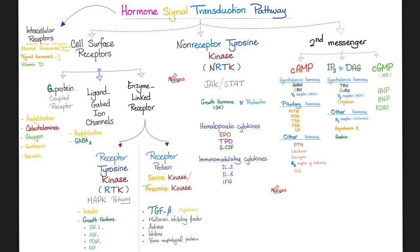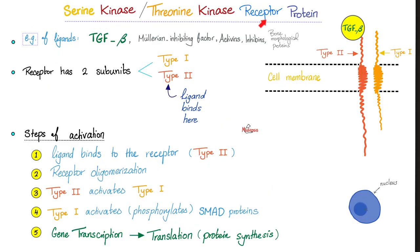Serine and threonine kinase receptor proteins — the story of TGF-beta and others. The receptor has two types: type 1 and type 2. The ligand binds only to type 2, which then activates type 1 via phosphorylation. This involves oligomerization, not simple dimerization. Type 2 activates type 1, which then activates SMAD proteins. The end result is transcription and translation.